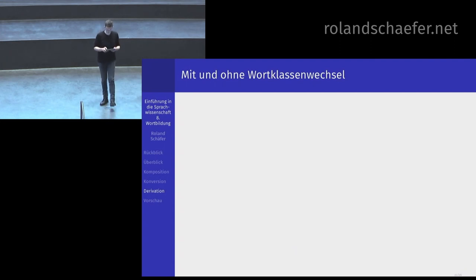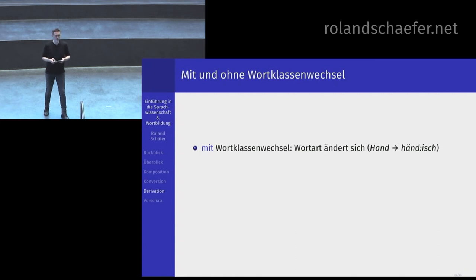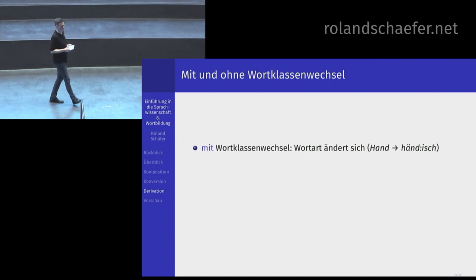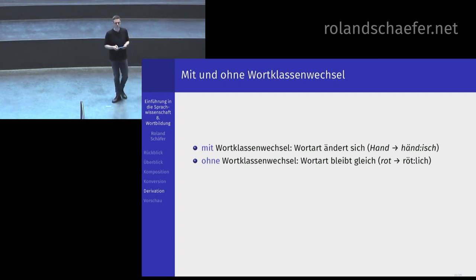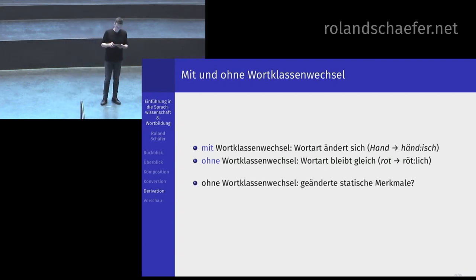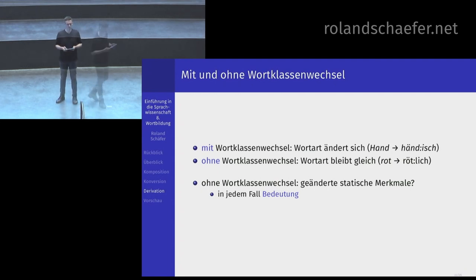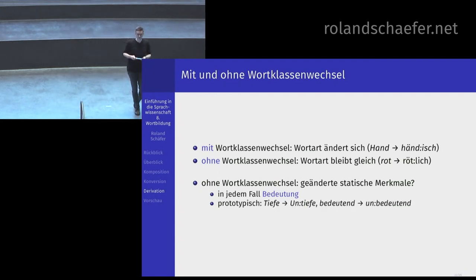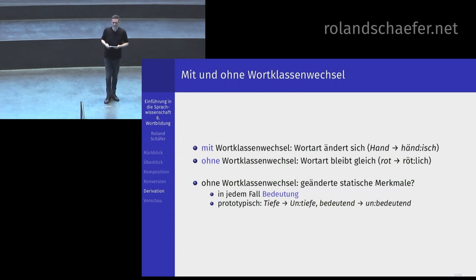Die Derivation gibt es mit und ohne Wortklassenwechsel. Mit Wortklassenwechsel: Hand, das Substantiv, wird mit -isch abgeleitet zu händisch, und dann ist es plötzlich ein Adjektiv. Ohne Wortklassenwechsel: Rot zu rötlich – beides sind Adjektive, aber es ändert sich trotzdem ein statisches Merkmal, nämlich die Bedeutung. Prototypisch für nicht wortklassenverändernde Affixe ist das Präfix un-. Das ist völlig wortartentransparent: Sie können es vor ein Substantiv hängen – Tiefe und Untiefe – oder vor ein Adjektiv – bedeutend und unbedeutend.